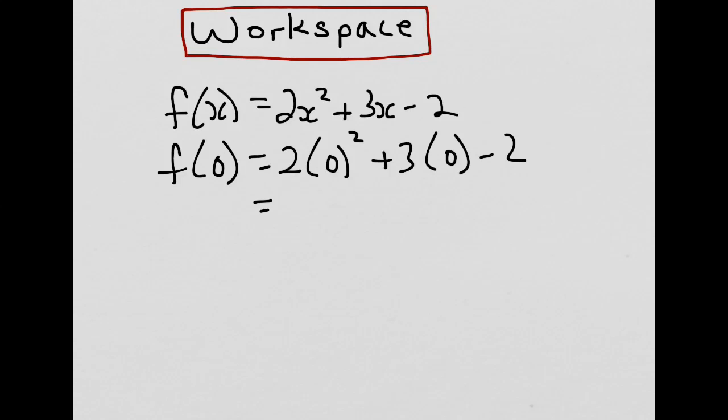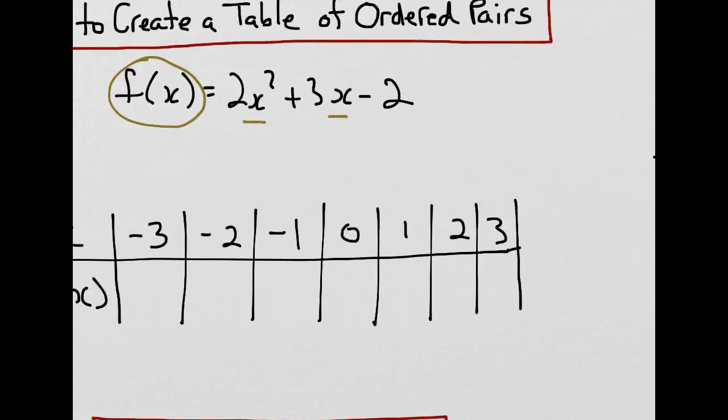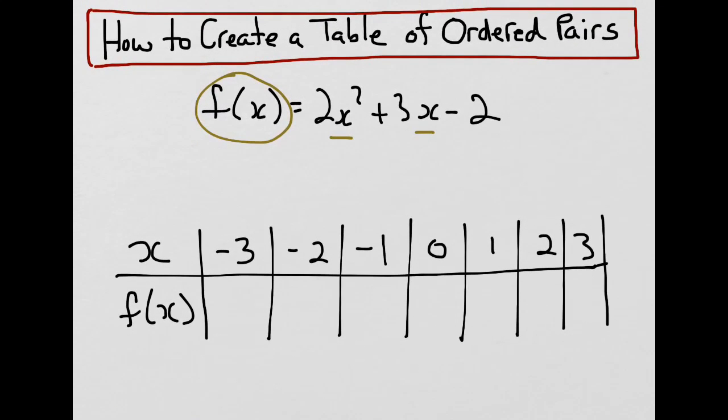0 squared is 0, times 2 is 0, plus 3 times 0, which is 0, leaves us with minus 2. So, what we do is we know when we come back over to our ordered pairs table, we've done the calculation. When x was 0, our value for f was minus 2.